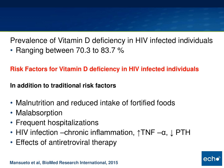In addition to these traditional risk factors, HIV-infected individuals have malnutrition with reduced intake of fortified food, malabsorption, and frequent hospitalizations that prevent sun exposure from infections and complications. HIV infection itself, from chronic inflammation, increases overproduction of TNF-alpha, which reduces the 1-alpha hydroxylation and reduces PTH to form active 1,25-dihydroxy vitamin D.